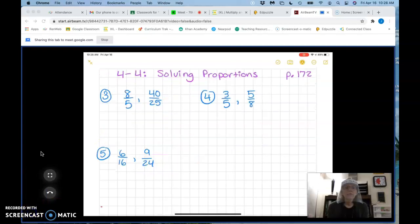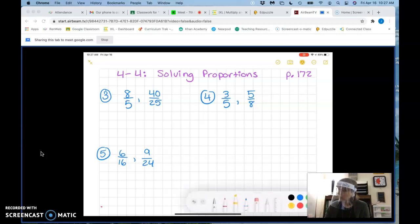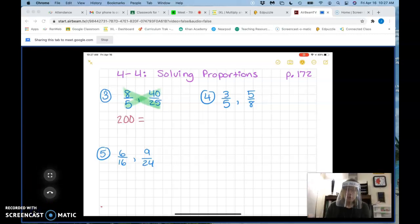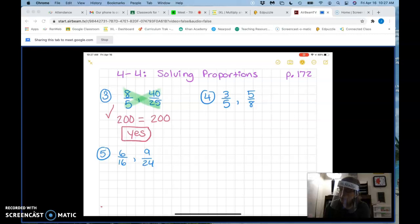So for numbers three through five on page 172, it says determine whether each pair of ratios form a proportion. Remember, it forms a proportion if we cross multiply and the two sides equal each other. So let's cross multiply. And the next one is five times 40. What's five times 40? 200. Do these two numbers equal each other? Yes. So are these ratios a proportion? Yes. They are.